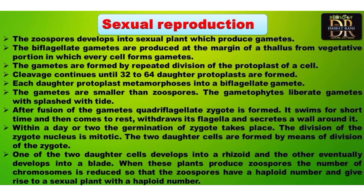In sexual reproduction, each gamete has two flagella — they are biflagellated. These biflagellated zoospores will be smaller in size, and they will fuse to form a quadriflagellated zygote. After some time the zygote swims for a short time, then withdraws its flagella, and then the zygote divides mitotically to produce a new sporophyte.